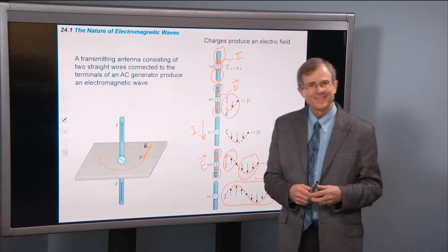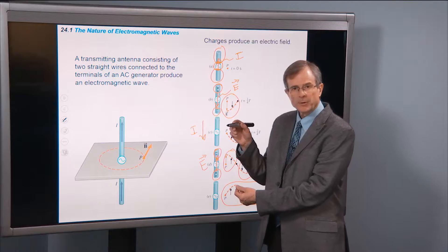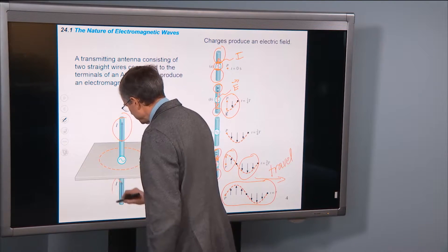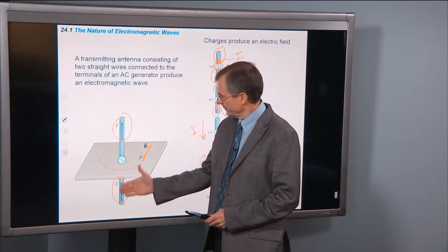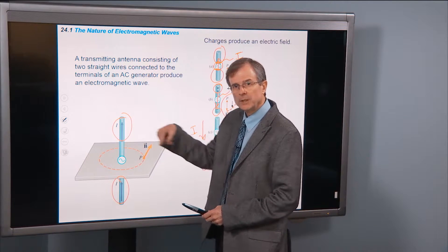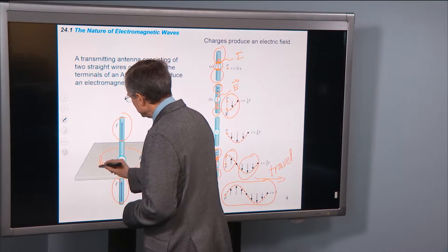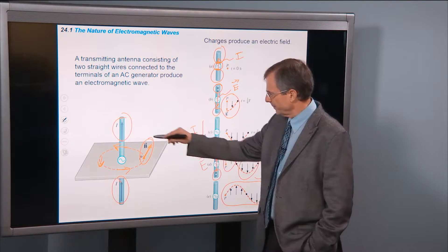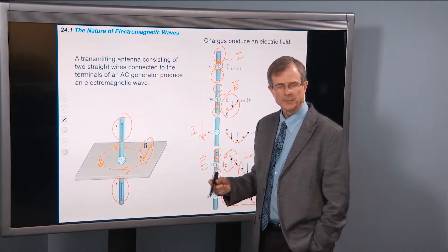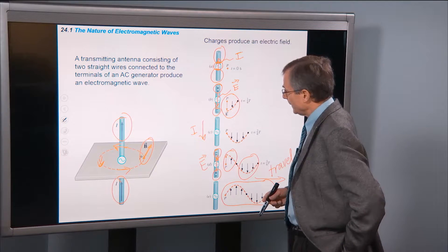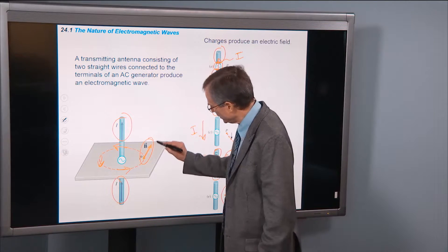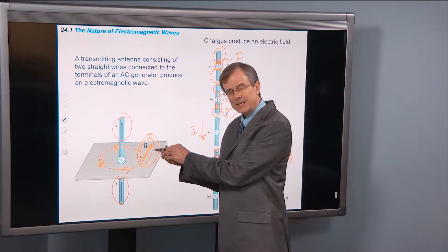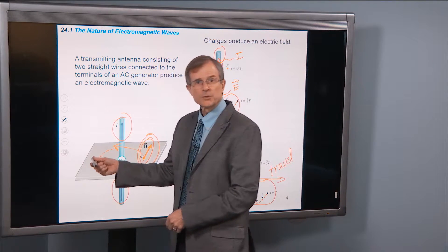Charged separation creates electric fields, but currents can create magnetic fields — and you would be right. While the current is in the vertical direction, we can use the right-hand rule: stick the thumb in the direction of the current and the fingers curl in the direction of the magnetic fields. Those magnetic fields circulate around this current-carrying wire. So the magnetic field on one side is directed into the screen and on the other side out of the screen.